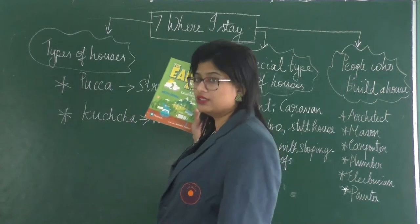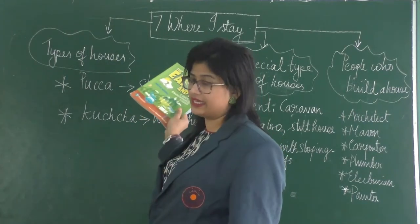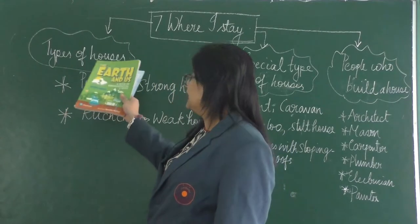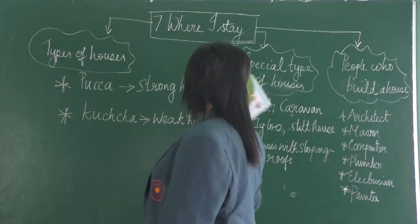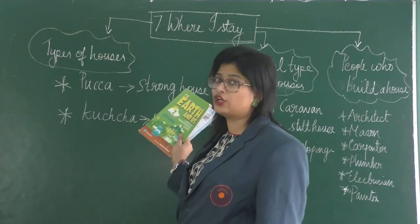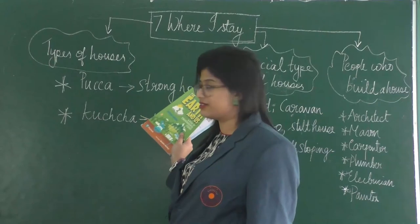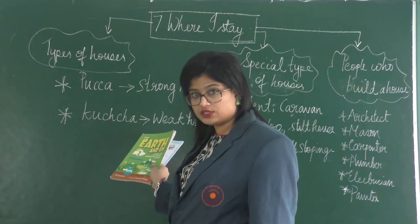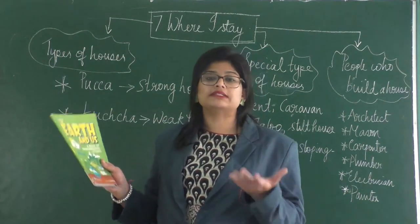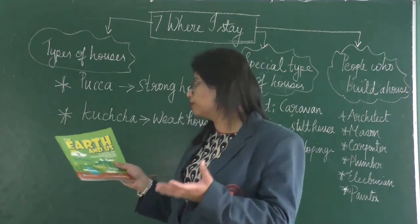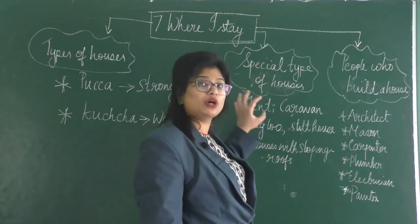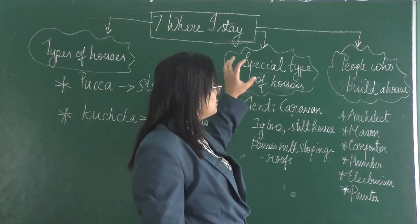This is the mind map of Chapter 7: Where I Stay. So what are the things we are going to study in this chapter? Types of houses: pakka house — that means a very strong house made out of cement, brick, etc. Next is kacha houses — these are weak houses made with straw, mud, small sticks, etc.